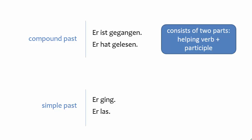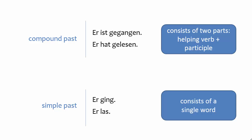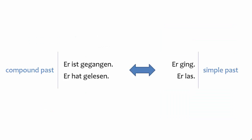There is a second past tense form called the simple past. It is so named because it consists of a single word. The meaning of the simple past is exactly the same as the meaning of the compound past — the meanings created by these two tenses are entirely identical and interchangeable.